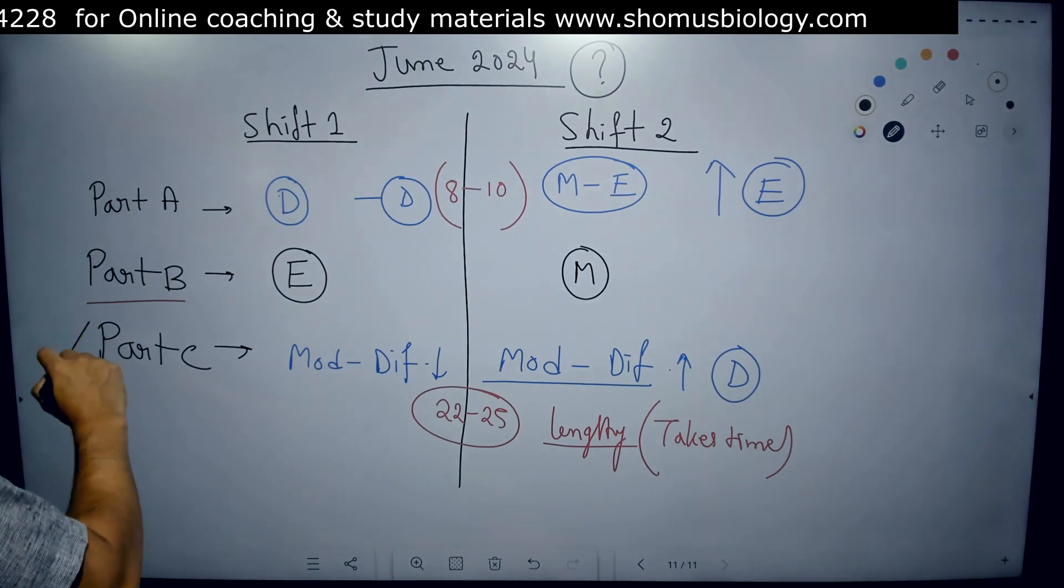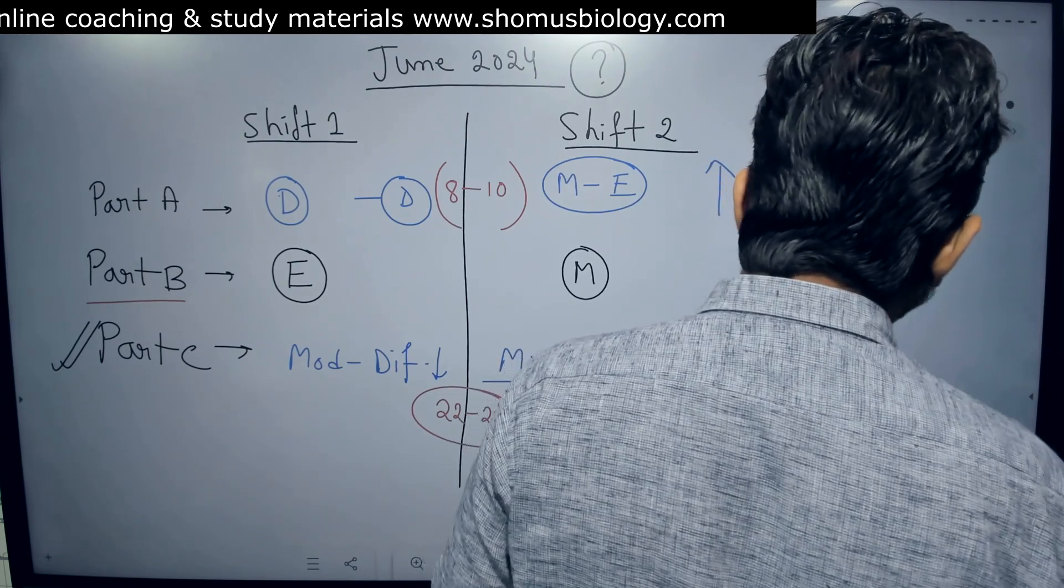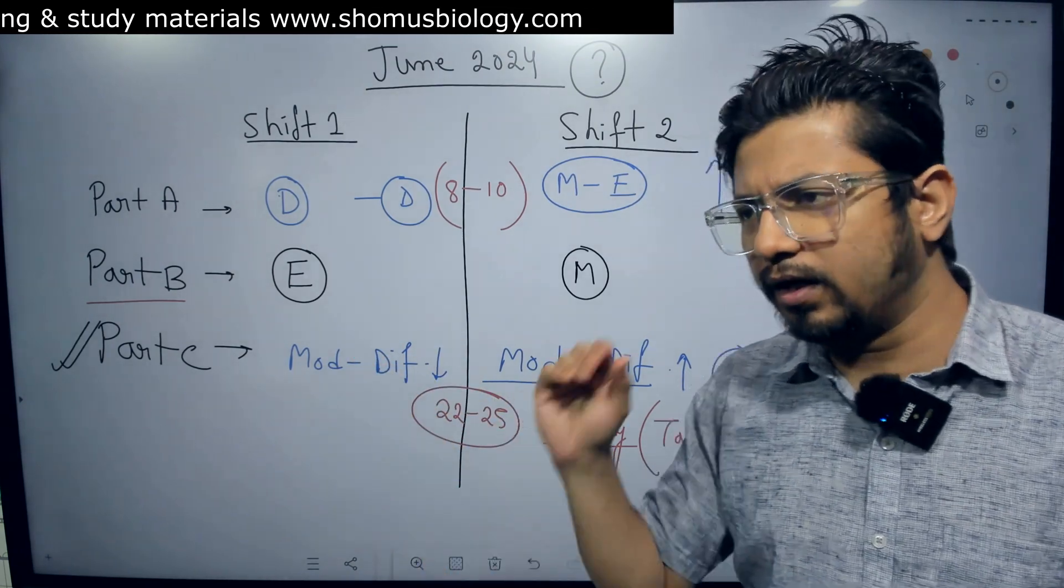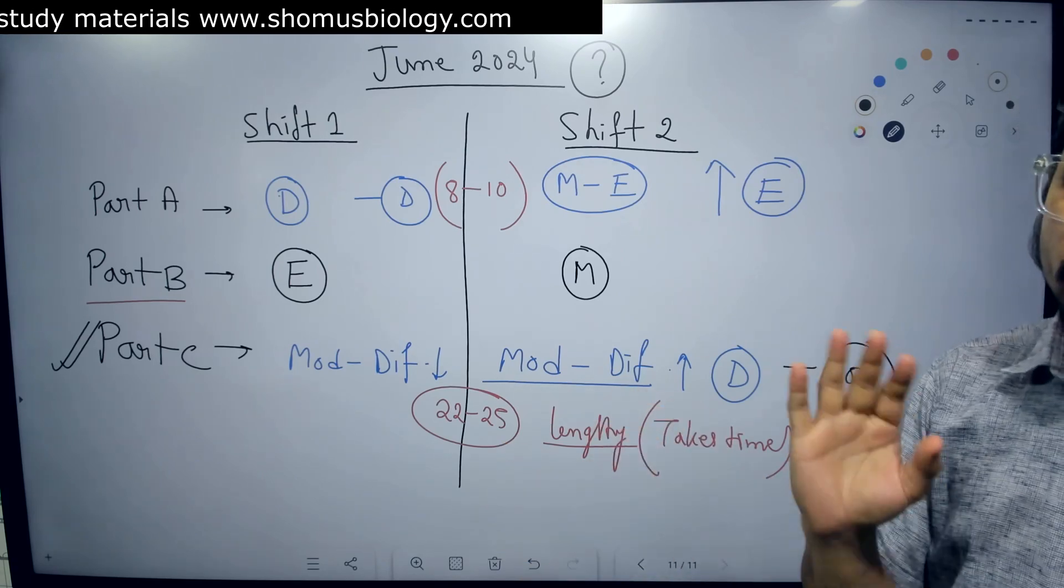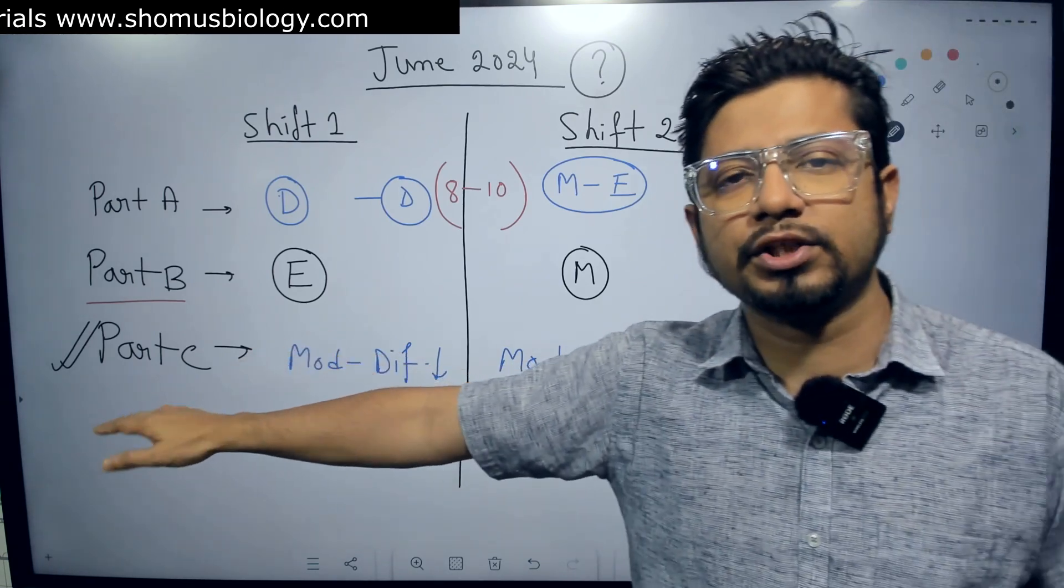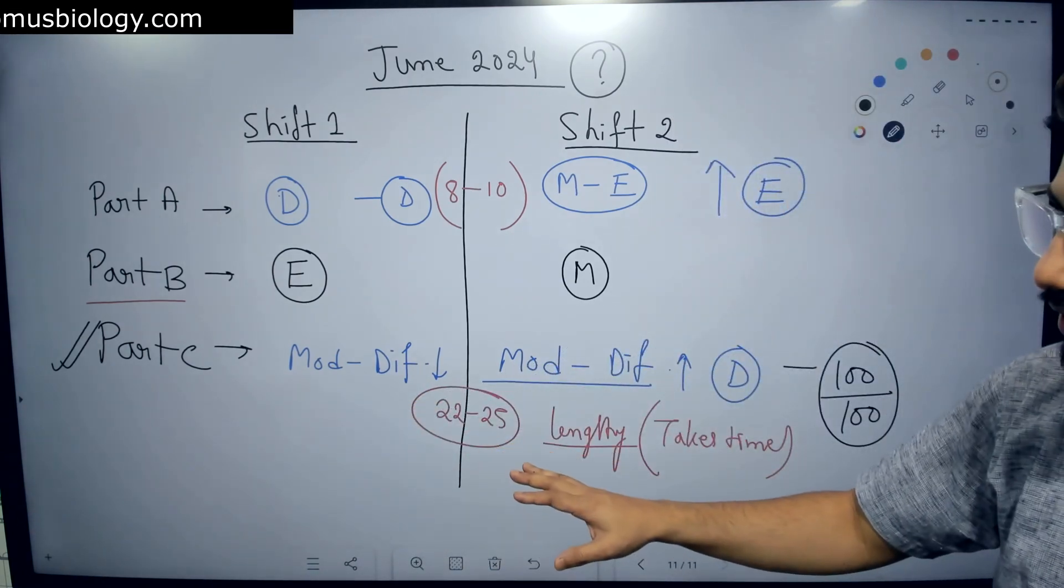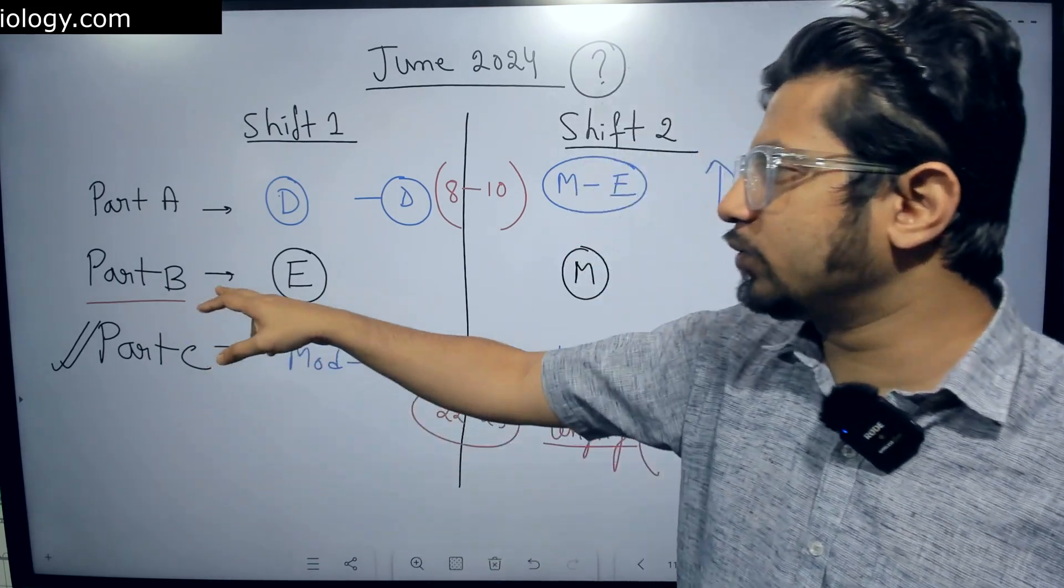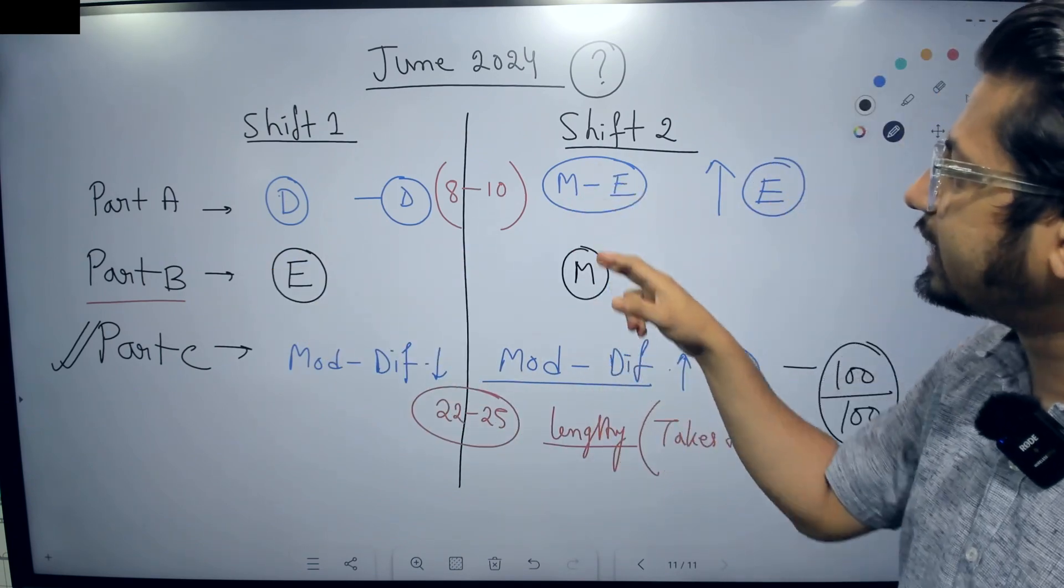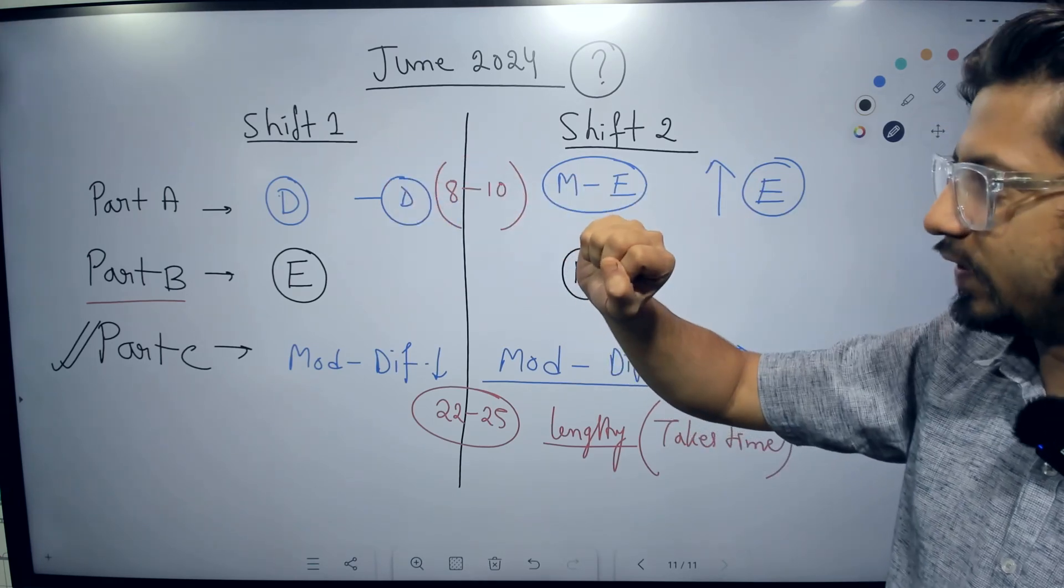Our target is always to score 100 out of 100 in Part C. And if that is the target, then this time you can achieve that. Whether it is moderate to difficult, you can still answer 22 to 25 questions. Part C will consume 2 hours 15 minutes, 2 hours 20 minutes of your time. But you can still answer 22 to 25 questions. If you move to Part B, which is in Shift 1 easy, you can answer some more. For Shift 2, it might be difficult. But in that case, Shift 2 Part A was easy, and Shift 1 Part A was a little difficult. So they switched it.